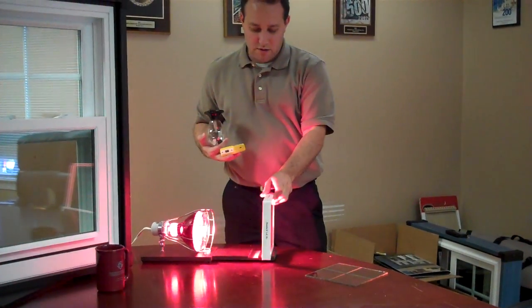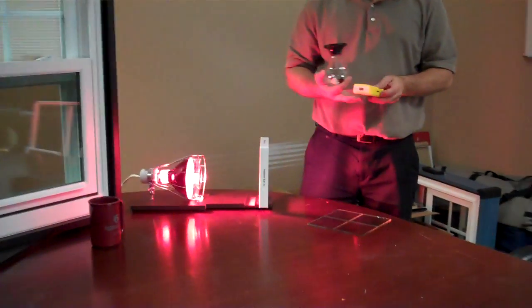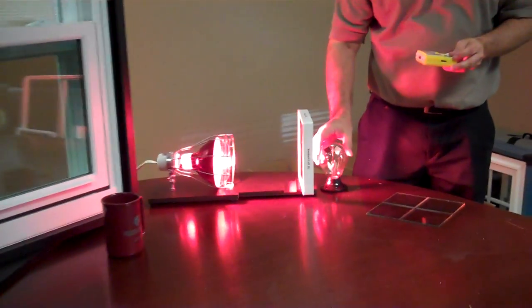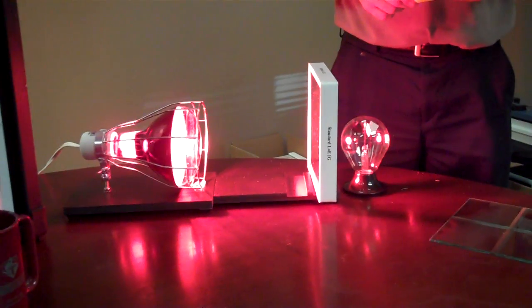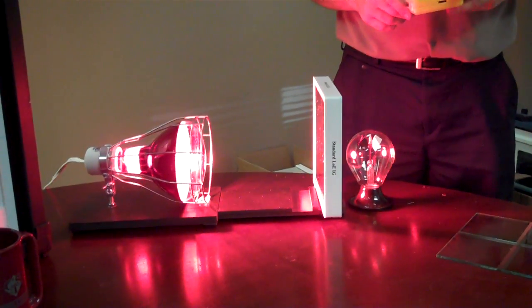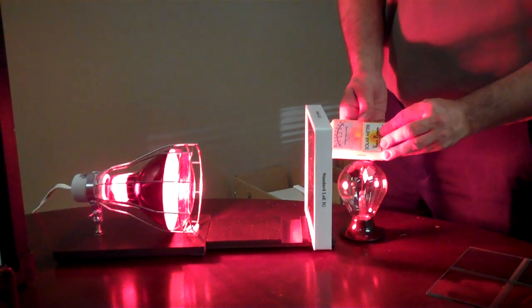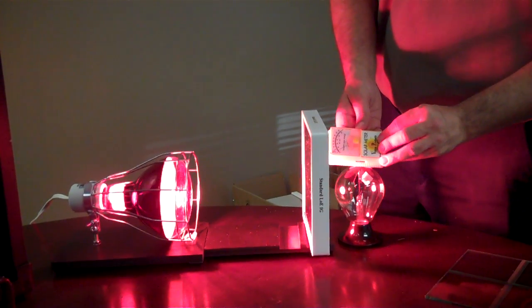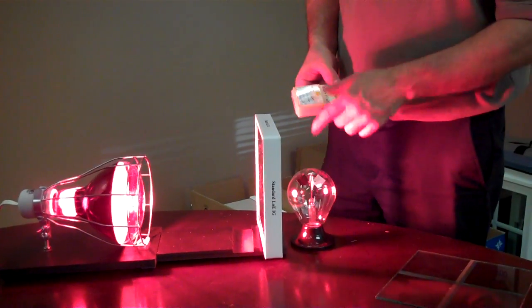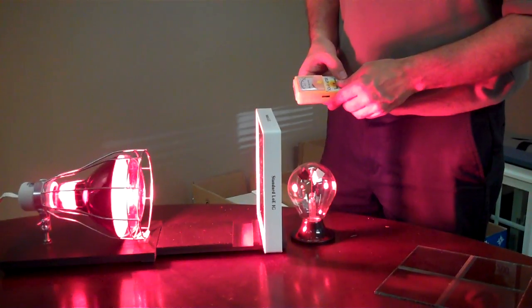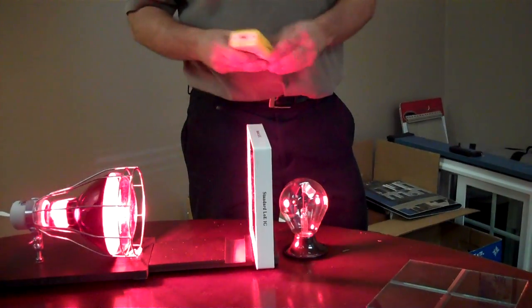If we move to standard low-E, which in our case is low-E squared, you'll see that this is going to move tremendously slower, and the solar meter will now register at roughly 50 BTUs of heat per hour coming through. And that will be moving at a much slower clip than what it was with the original glass.